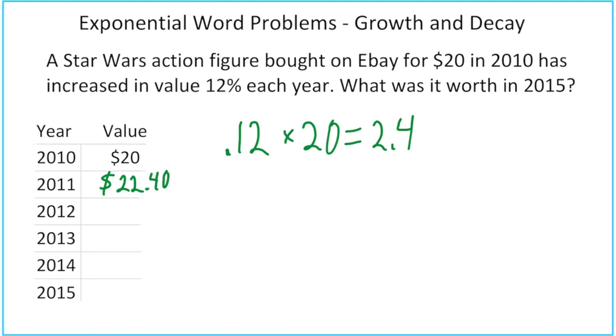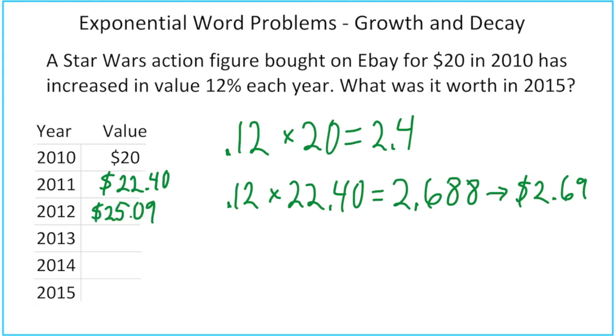Now, you don't get to add $2.40 every year because what's happening is each year it's increasing 12% based on its value at the start of that year. So the next thing we'd have to do is find out 12% of 22.40 because that's how much it would increase between 2011 and 2012. So if we calculate that, we get 2.688. Now, since this is a money problem, I would turn that into $2.69. For most money problems, it makes sense to just round it to the nearest penny. So when I add that to $22.40, I end up with $25.09.